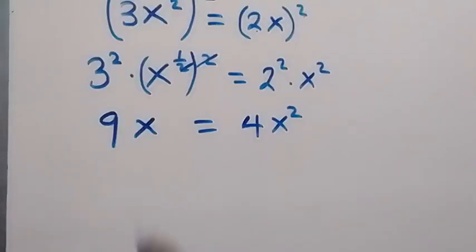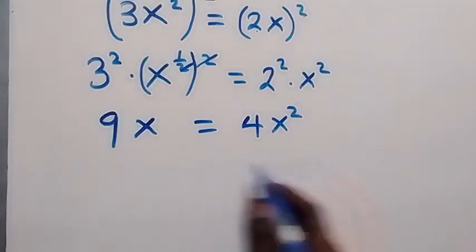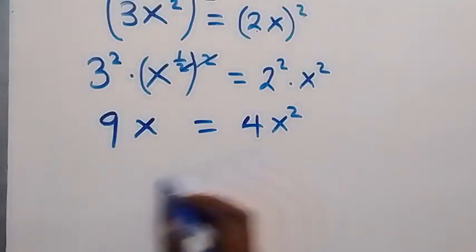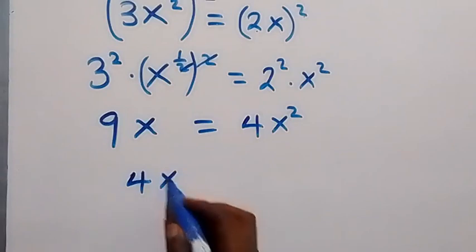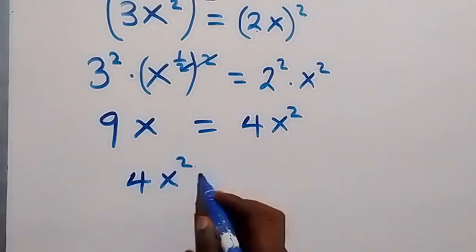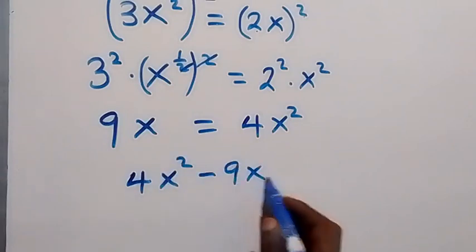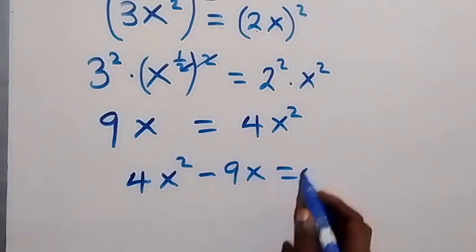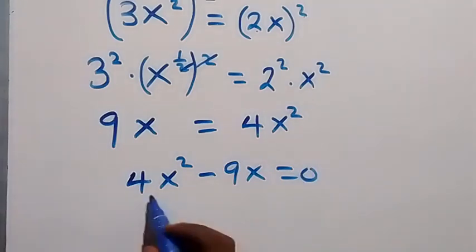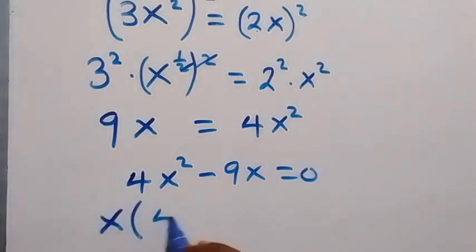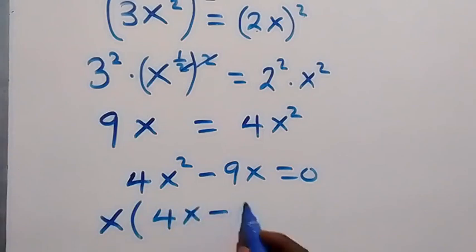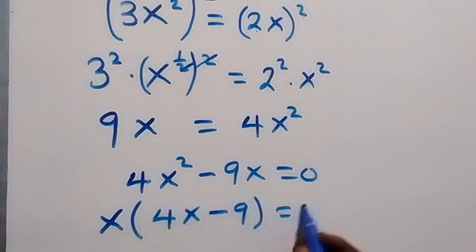We take 9x to this side. Writing the equation, we have 4x squared minus 9x equals 0.